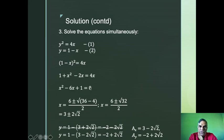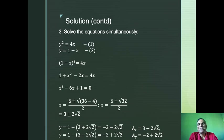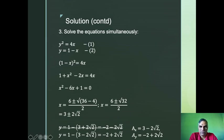Using the quadratic formula x = (−b ± √(b² − 4ac)) / 2a: plugging in gives x = (6 ± √(36 − 4)) / 2 = (6 ± √32) / 2, which equals 3 ± 2√2. So x has two different values.